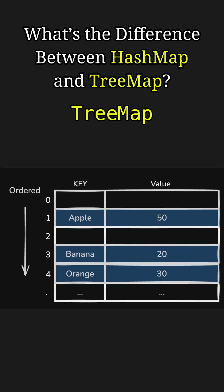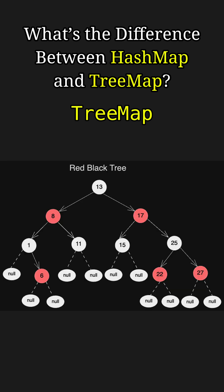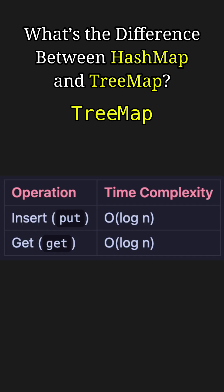On the other hand, a TreeMap stores key-value pairs in a sorted order based on the natural ordering of the keys or a custom comparator. It uses a red-black tree internally, which ensures the keys are always sorted and enables logarithmic time performance for get and put operations.